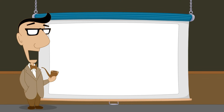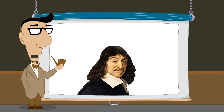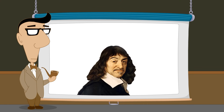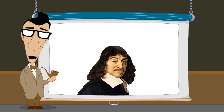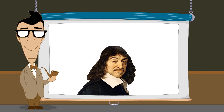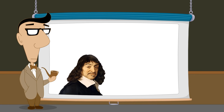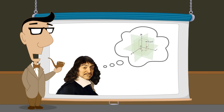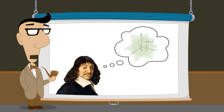The Cartesian product is named after the French mathematician and philosopher René Descartes. In the next lecture, we will see how Descartes' ideas led to the creation of the Cartesian coordinate system, uniting the subjects of algebra and geometry and creating a revolutionary new way to visualize mathematics.